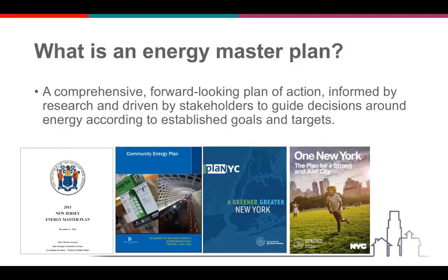There are multiple examples of energy master plans at all different levels of governance. At the state level, we have to look to New Jersey, where in 2011 an energy master plan was put forward. At the county level, there's an example in Arlington County in Virginia, where they put together an element of their comprehensive plan, a community energy plan. And famously, New York City is well-known for its sustainability plans, which focus a lot on energy and the ways that energy can be made more efficient and used more wisely in the city. Both PlaNYC and its follow-up One New York are examples of local energy master plans. And more and more, smaller communities are beginning to do energy master plans as well, as a chance to get better control of their energy future.